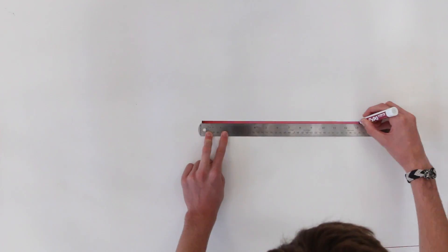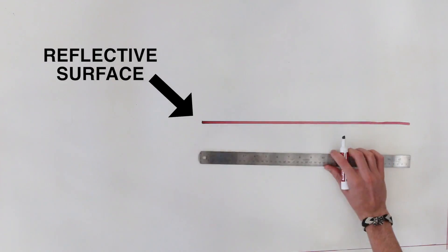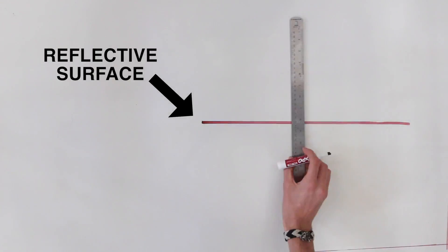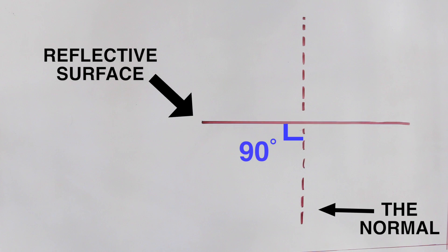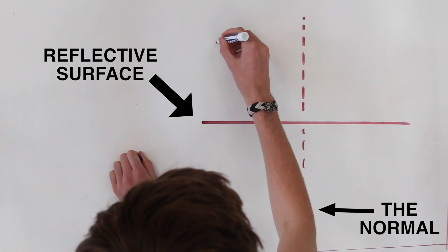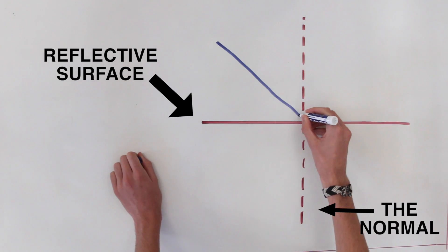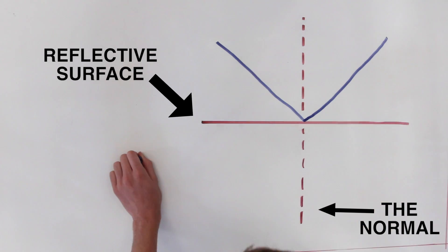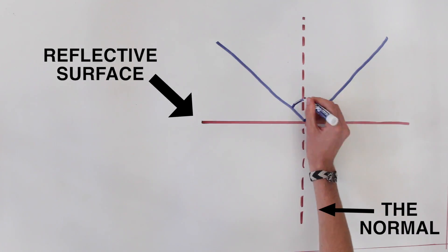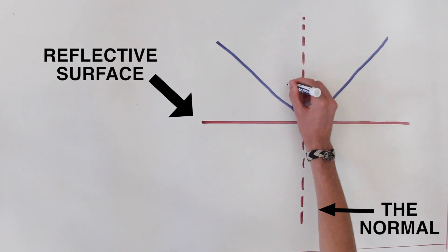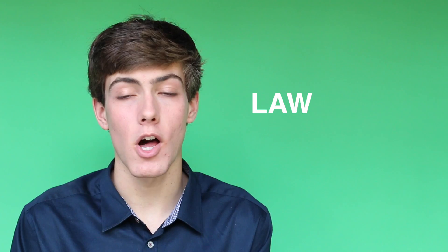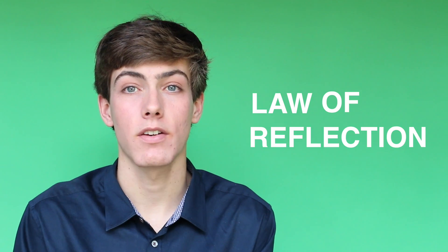Here is a reflective surface. This line is called the normal, an imaginary line that meets the reflective surface at 90 degrees. Light that strikes the surface at a particular angle relative to the normal will bounce off, or reflect, at the same angle. This is called the law of reflection.